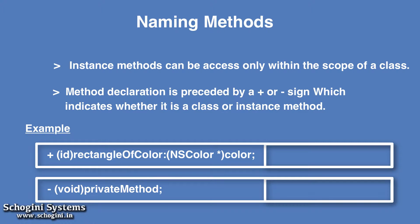Here in the syntax of method declaration, the declaration is preceded by a plus or minus sign, which indicates whether it is a class or instance method. Plus sign indicates that it is a class method and can only be called by a class. Minus sign indicates that the method is an instance method and can only be called by an instance of the class.